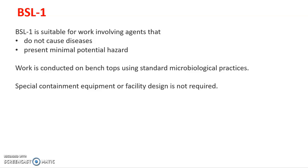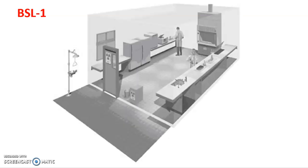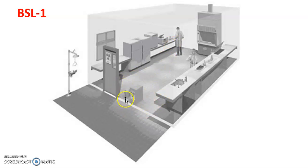BSL-1 is ideal for training people in microbiological techniques. When students are getting training in BSL-1, a supervisor must be present, and if they need any medical assistance, it should be provided immediately. This is the simplest laboratory facility design for biosafety level one — there is no autoclave, the person works on the bench top, there are two waste bins (one for ordinary waste, one for infectious waste), and biohazard labels are present.